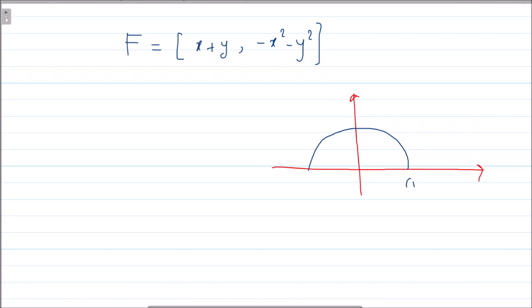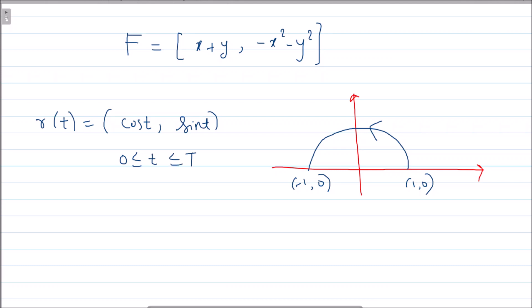So this is my point (1, 0) and this is (-1, 0), and I am going from (1, 0) to (-1, 0). If I want to parameterize this curve r(t), it is a circle of radius one, so r(t) = (cos t, sin t). The limits of t are 0 ≤ t ≤ π, because we go from 0 to 180 degrees.